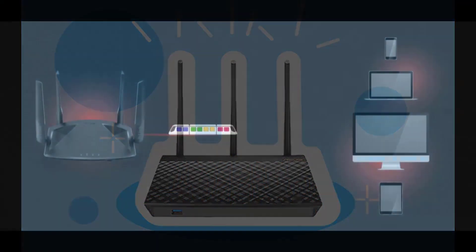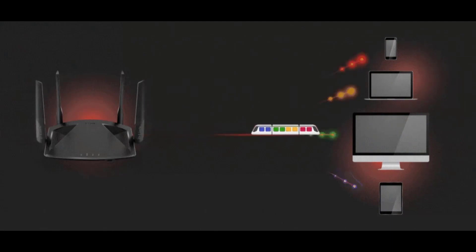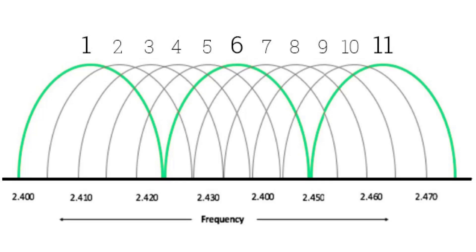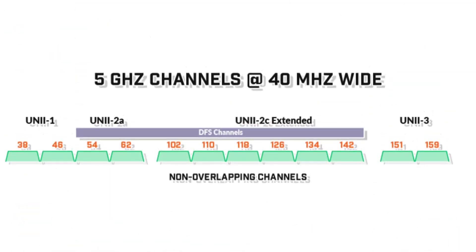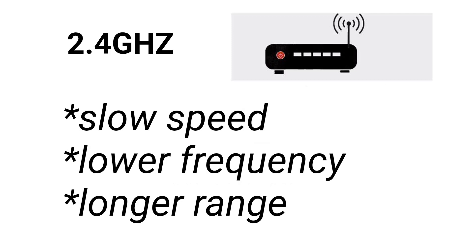Using the 5 gigahertz band resolves slow Wi-Fi speeds and connection drops resulting from interference from other devices. The 2.4 gigahertz band has only 11 channels to choose from, but from these 11 channels only three are non-overlapping — channels 1, 6, and 11. The 5 gigahertz frequency band has more channels, with up to 25 non-overlapping channels.